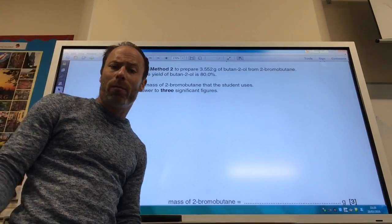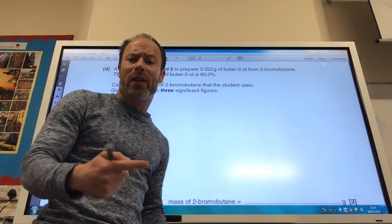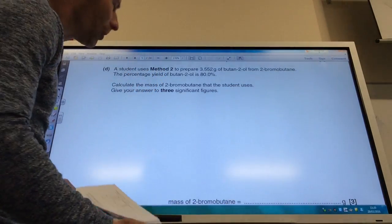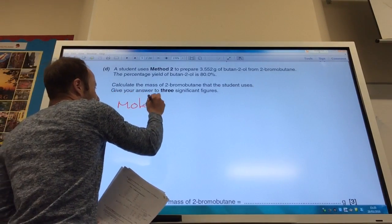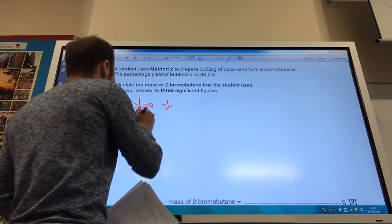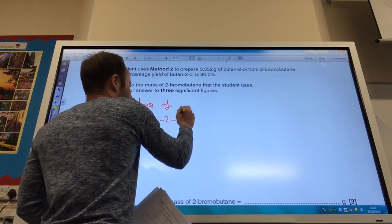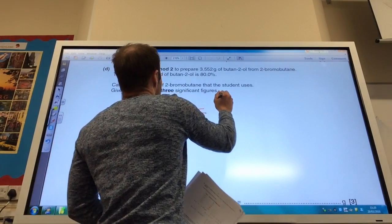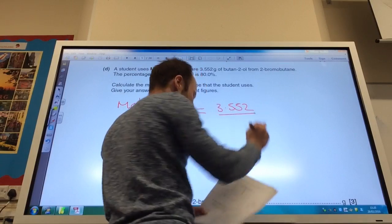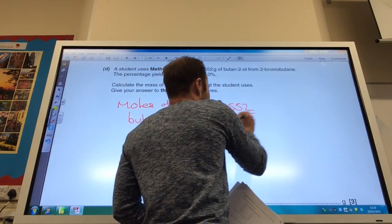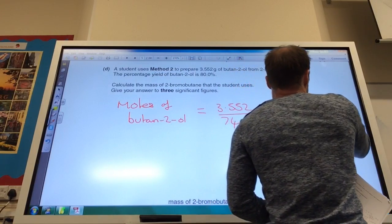So we know from the equation that one mole of 2-bromobutane makes one mole of butan-2-ol. It's a one-to-one reaction. So let's have a look at the moles of butan-2-ol that I made. And that is going to be 3.552 divided by the molar mass which is 74 which comes to 0.048.